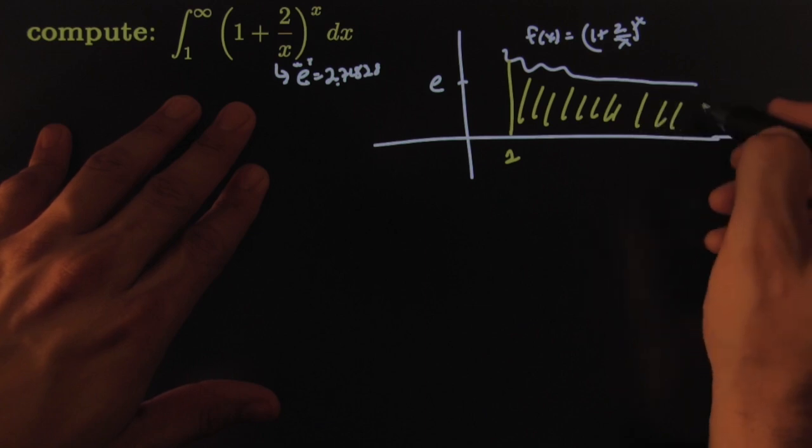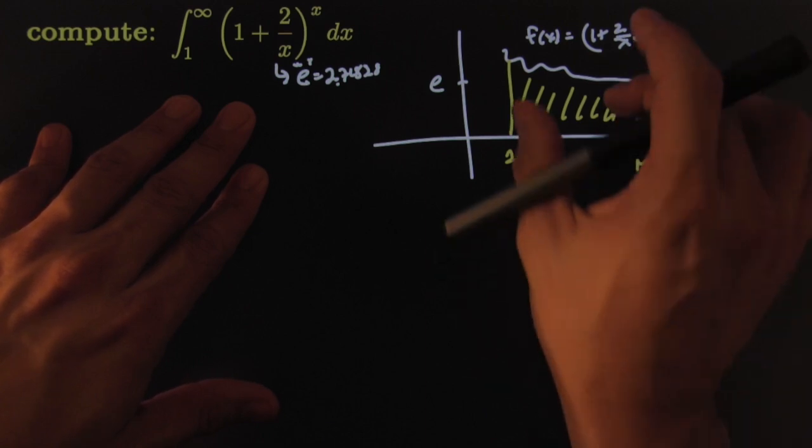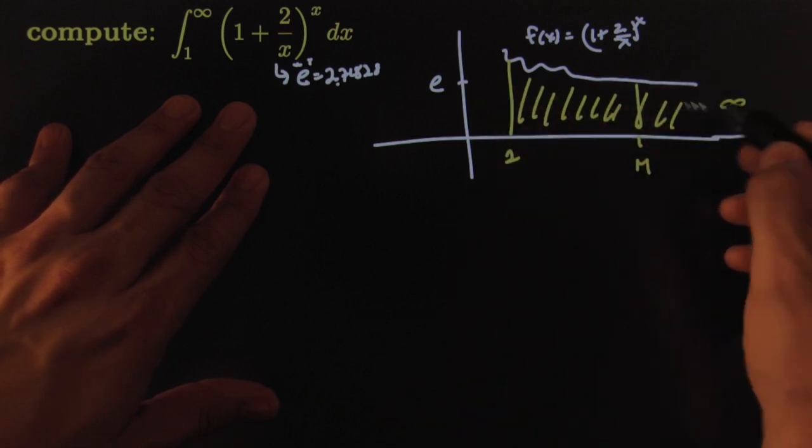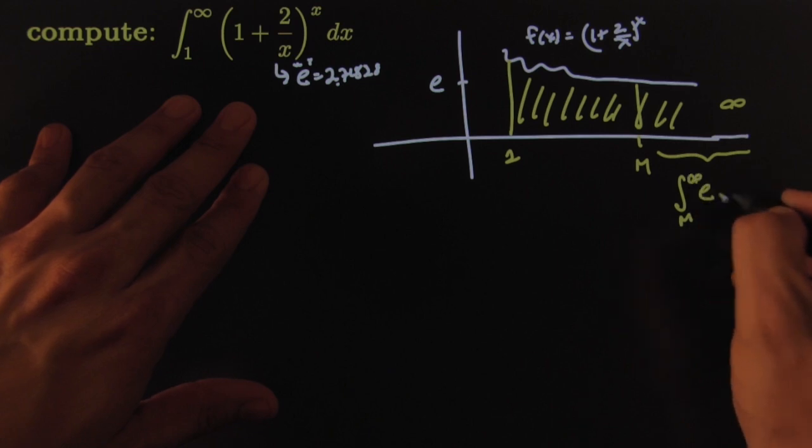After some point m, I don't care what happened here—this piece is finite from 1 to some point m—but after some point m this integral looks like the integral from m to infinity of e.